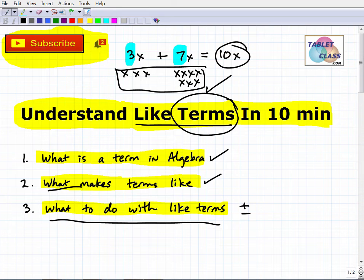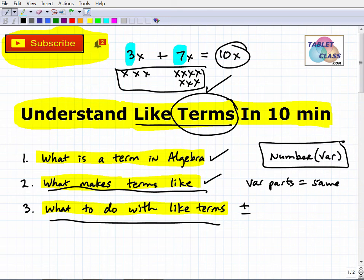Let's just kind of do a quick review here. What makes terms like? The variable parts have to be exactly the same. And then what is a term in algebra? It's basically going to be a number, some sort of number, fraction, decimal, and next to it is going to be some sort of variable. This is a term. It's the building blocks of algebra, kind of the DNA, the molecules of algebra. So you really, as you study algebra, and if you're studying like terms right now, this is generally taught in the beginning of the course because it's the basic building blocks of algebra.